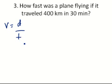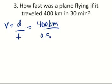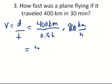It says, how fast was a plane flying if it traveled 400 kilometers in 30 minutes? We can figure out 400 kilometers and time can change to a half hour, 0.5 hours. We know that if we take 400 and we divide it by 0.5, we'll end up with 800 kilometers per hour.